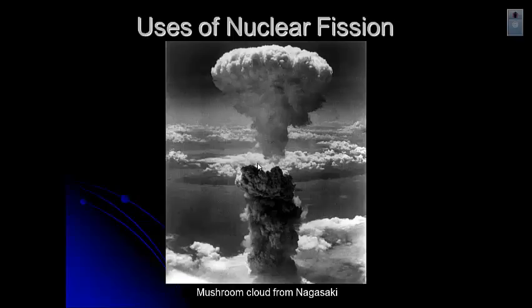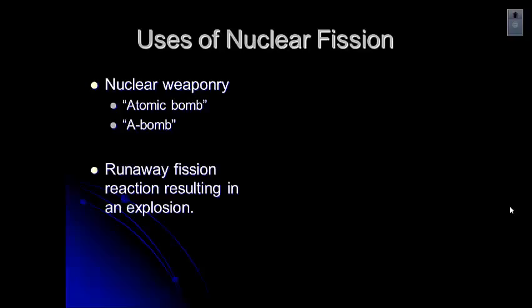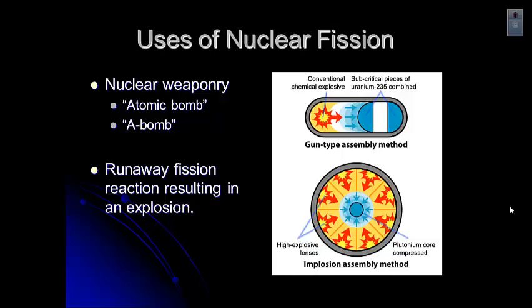Let's talk about other uses of nuclear fission. This is what happens when you have supercritical mass. This is a picture of the mushroom cloud from Nagasaki, Japan. It's a runaway fission reaction. You've probably heard of atomic bombs, an atom bomb or an A-bomb. It's a runaway fission reaction that results in an explosion. There was a conventional chemical explosive here, and then two subcritical pieces of uranium-235.